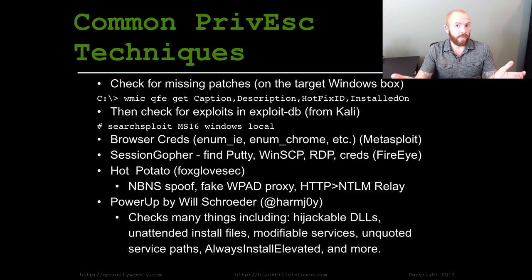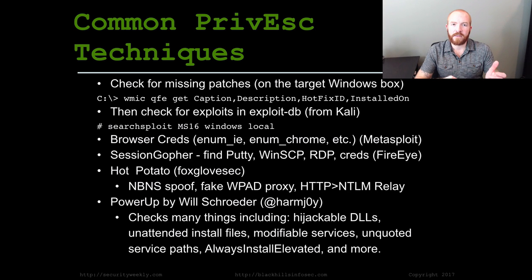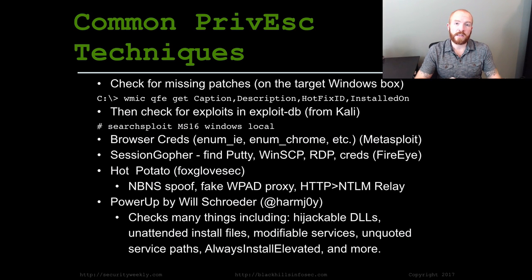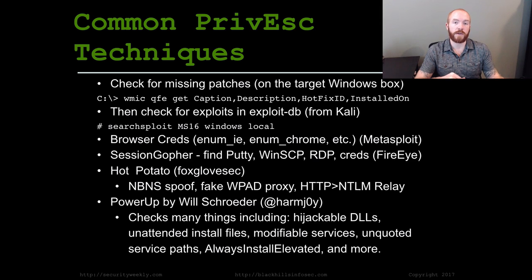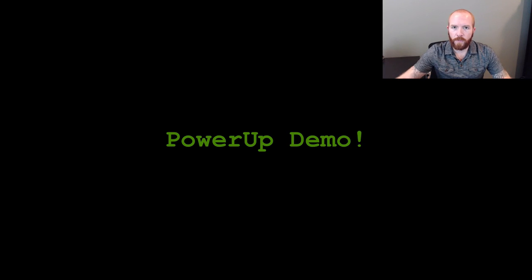The last thing — and I think this is probably the most important I've seen in terms of privilege escalation in the last few years — is PowerUp from HarmJ0y. It's an amazing PowerShell tool that will check a number of different things, including finding hijackable DLLs, unattended install files, and various modifiable services. In addition, it provides tools for actually exploiting those vulnerabilities — it not only tells you here's a vulnerability, but also provides the binary or DLL you could use to hijack that process. So that's the tool I wanted to demo today.